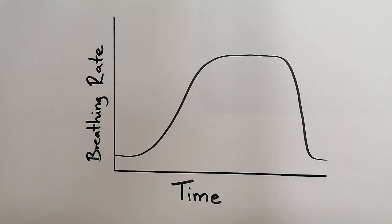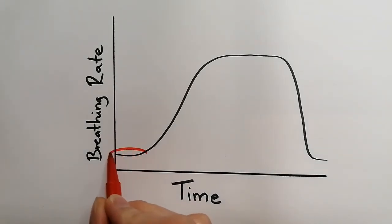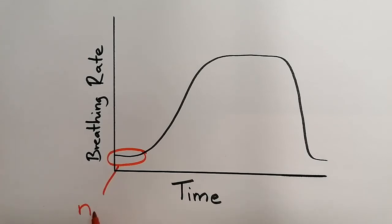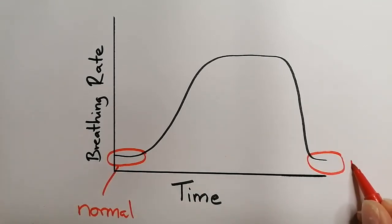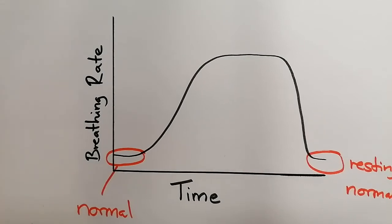So in order to release lots and lots of energy, we need lots of oxygen, so we need a higher breathing rate. Down here on our graph, this is our normal. So if you were sleeping, for example, or just sat down, this is the amount that we would breathe. So at the beginning of the graph and also at the end of the graph, this is our resting or normal breathing rate, the amount that we normally breathe.